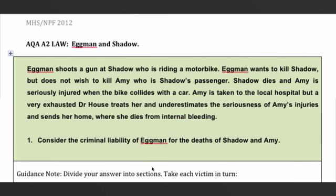Now have a look at this short scenario. In an exam you won't have a question this short unless you're doing AS Law, but we're looking at AQA A2 Law and this is just a snippet of a problem question. Eggman shoots a gun at Shadow, who is riding a motorbike. Eggman wants to kill Shadow but doesn't wish to kill Amy, who is Shadow's passenger. It's similar to the earlier scenario, so applying your knowledge here shouldn't be too difficult.